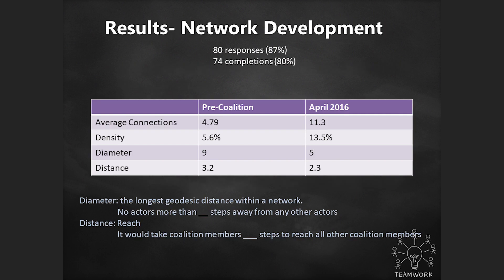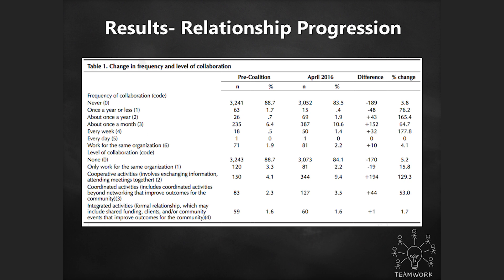Prior to the coalition, the average person knew 4.79 people. After 18 months, the average person knew 11.3 people. Prior to the coalition, 5.6% of all possible relationships existed; after 18 months, 13.5% of all possible relationships existed. Prior to the coalition, no actors were more than nine steps away from any other actors. After the coalition started meeting, no actors were more than five steps away — and we also saw a decrease in average distance, which means if you wanted to get information out to the network, you could do that faster.